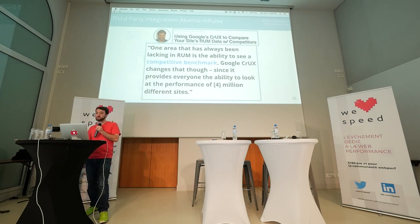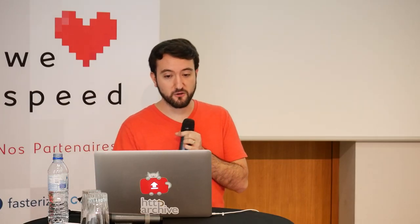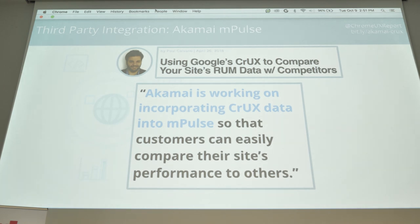Akamai has a RUM product called mPulse and Paul Calvano, a senior engineer at Akamai, wrote a blog post noting that RUM is conventionally a first-party experience and site owners have been limited to seeing only the user experience data for their own website. But CRUX enables competitive analysis in RUM tools. He goes on to say that Akamai is actively working on integrating data from the Chrome UX report into mPulse. So it's really exciting that we can see in existing RUM tools how your performance compares against competitors.